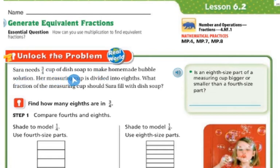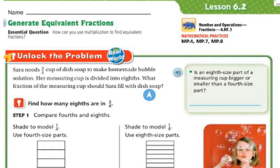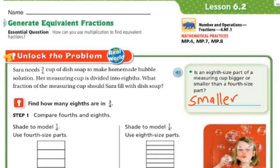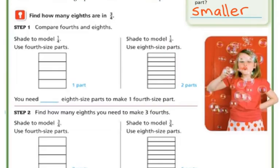Sarah needs 3/4 cup of dish soap to make homemade bubble solution. Her measuring cup is divided into 8ths. What fraction of the measuring cup should Sarah fill with dish soap? An 8th-size part of a measuring cup is smaller than a 4th-size part. So first I need to find out how many 8ths are in 3/4.